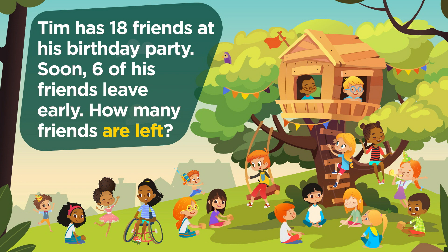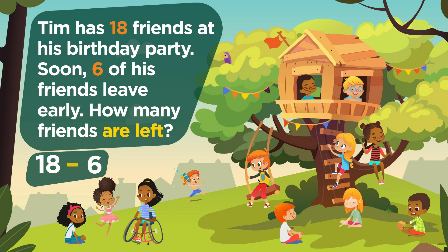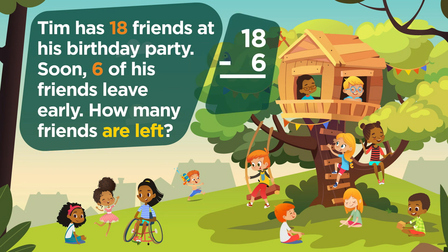The numbers are the other important detail. The two numbers mentioned in this problem are 18 and 6. To find out how many friends are left at the party, begin with the number of friends who came to the party, 18. Subtract the number of friends who left, 6. One way to solve this equation is by stacking the numbers. In the ones column, subtract 8 minus 6. 8 minus 6 equals 2. In the tens column, 1 minus nothing equals 1. There are 12 friends left at Tim's party.